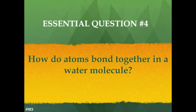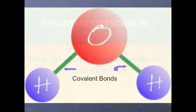Essential question number four: How do atoms bond together in a water molecule? To answer this question, we need to look back at the structure of water. Water is made up of two hydrogens attached to an oxygen. The bond holding each one of the hydrogens to the oxygen is covalent, which means hydrogen and oxygen are sharing electrons.